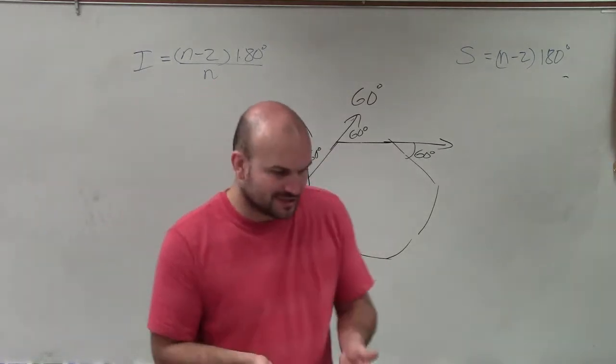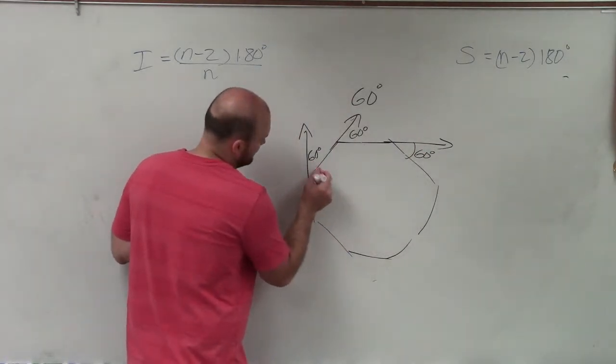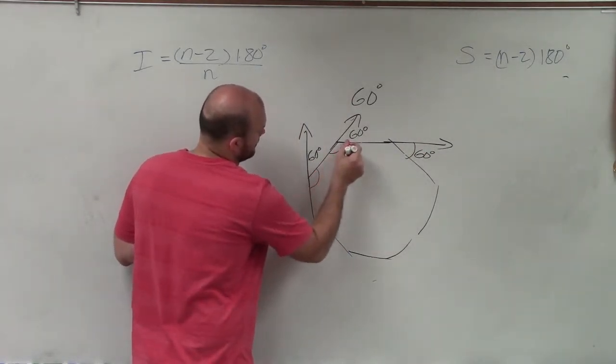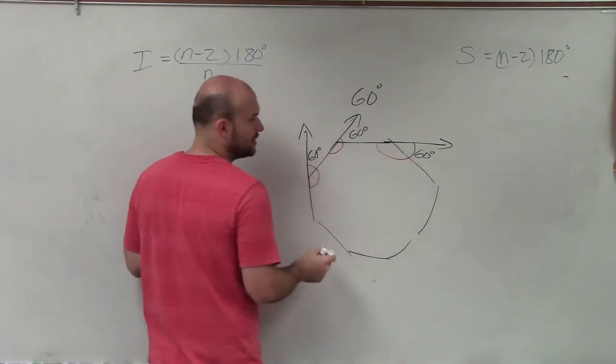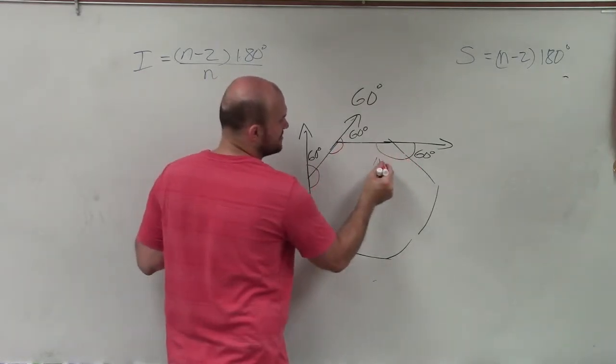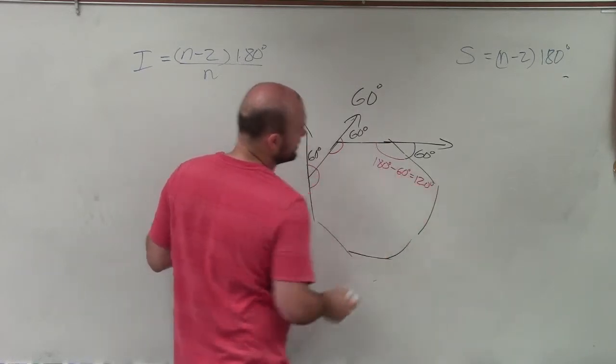And what's nice about knowing the exterior angles is you know that the exterior angle and the interior angle form a linear pair. So you can see these two angles, they all add up to 180. So to figure out the red, all I simply need to do is take 180 minus 60 degrees, and that equals 120 degrees.